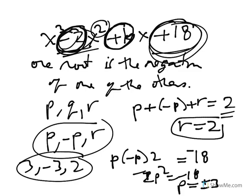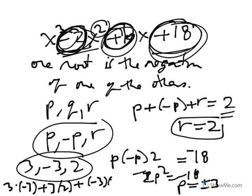So the three roots are 3, negative 3, and 2. And then they might ask: what's k? Well, k is the sum of the roots taken two at a time. So now I can just do 3 times minus 3, plus 3 times 2, plus minus 3 times 2, and we get negative 9 for k.